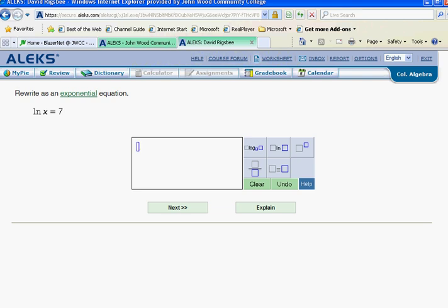And so they give us this cryptic thing. We've got an ln here we've never seen before and they want this converted to exponential. So let's go over here and talk about this a little bit more.